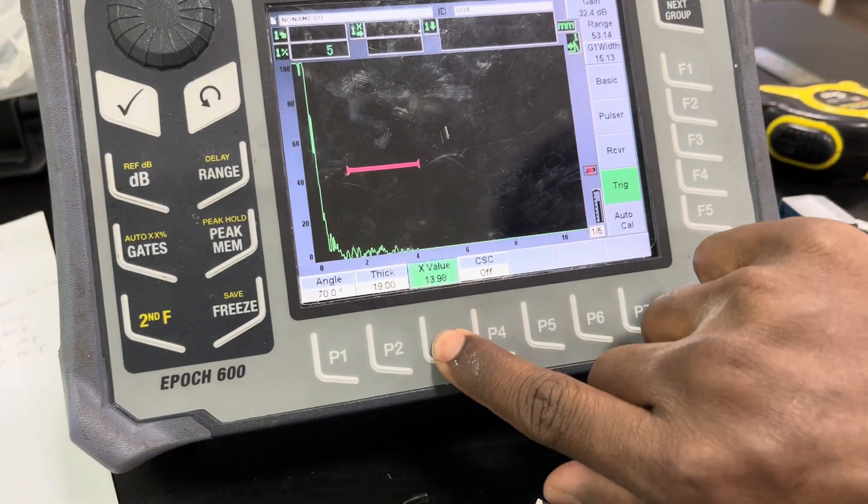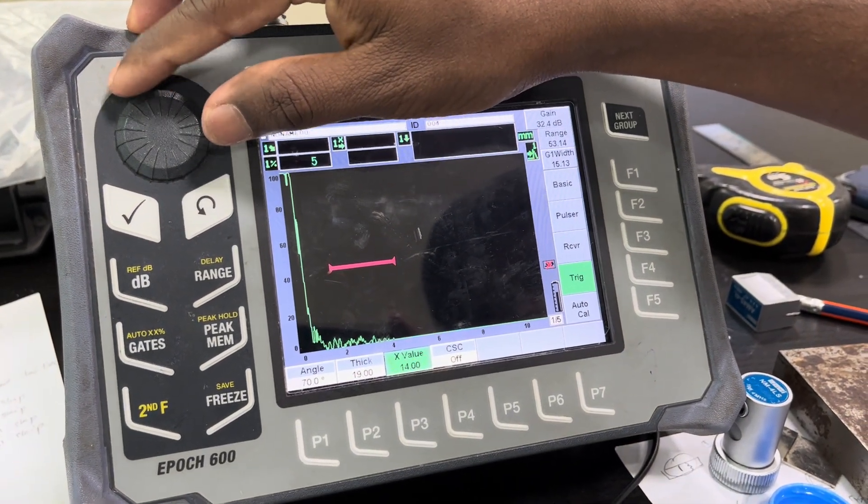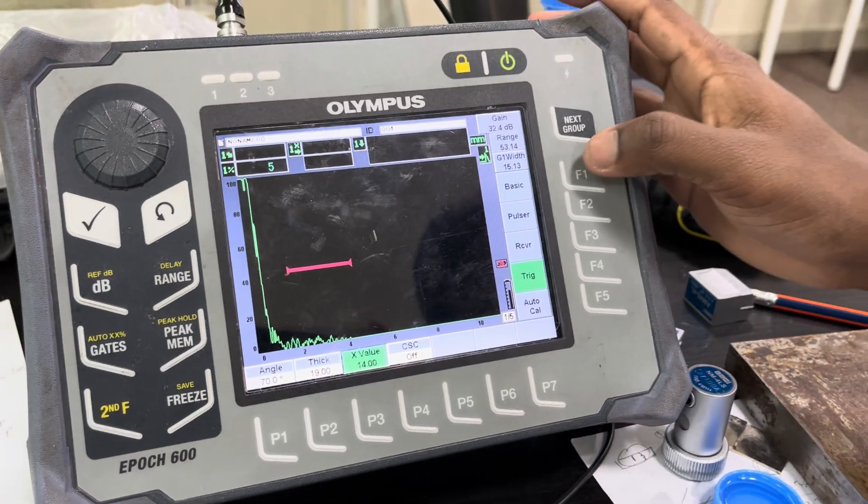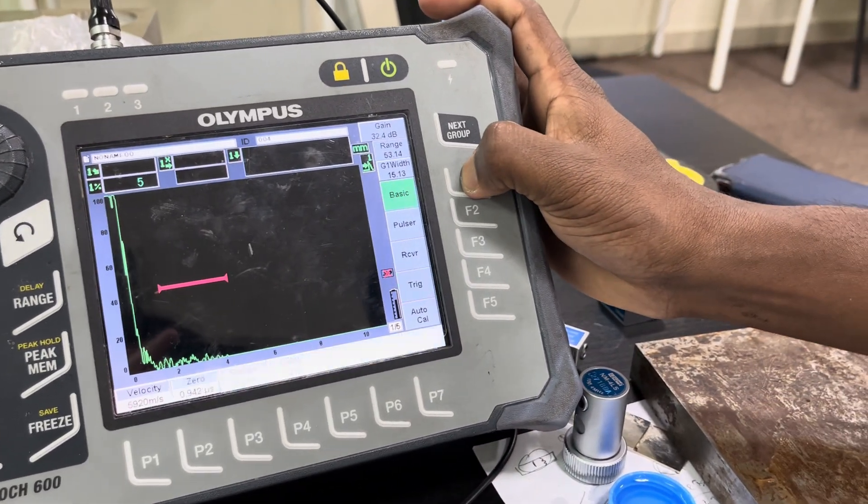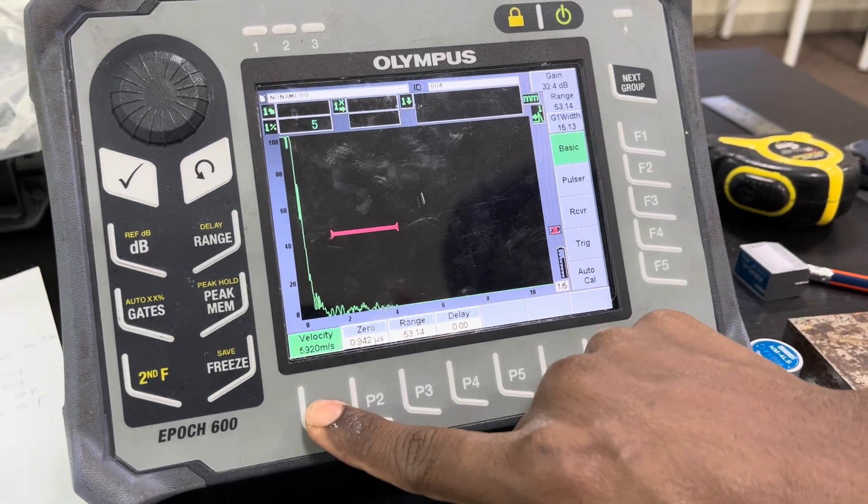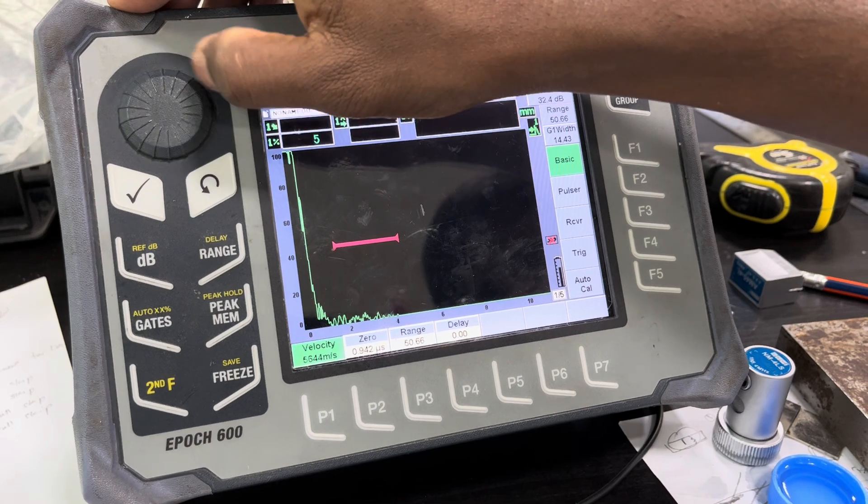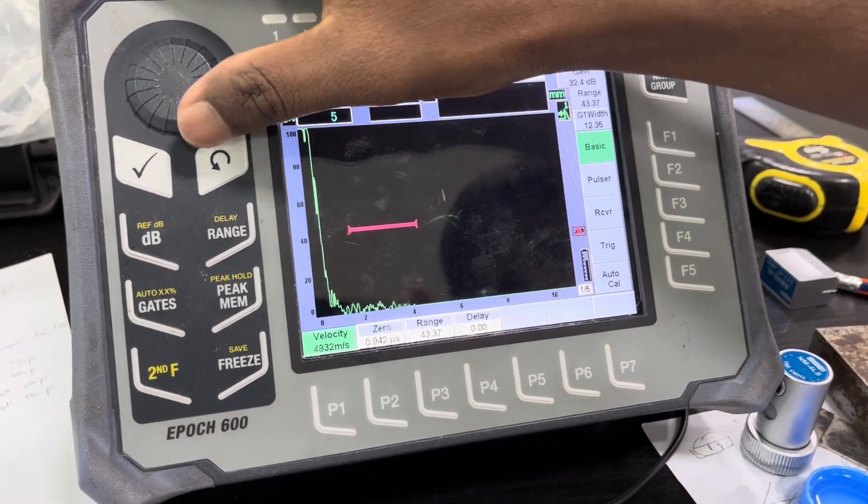When I did the calibration, the XO value was 14. Now I am going to check the velocity of the angle beam. In the machine, the velocity is 3260, so I am going to set 3260.